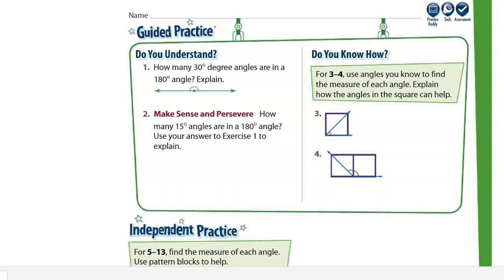Number 2 says, How many 15 degree angles are in a 180 degree angle? Use the answer to exercise 1 to explain. Pause and think about this. Looking back at number 1 where we said 6 of the 30 degree angles make up 180 degrees. How many 15 degree angles make up 180 degrees? What is the relationship between 30 and 15?